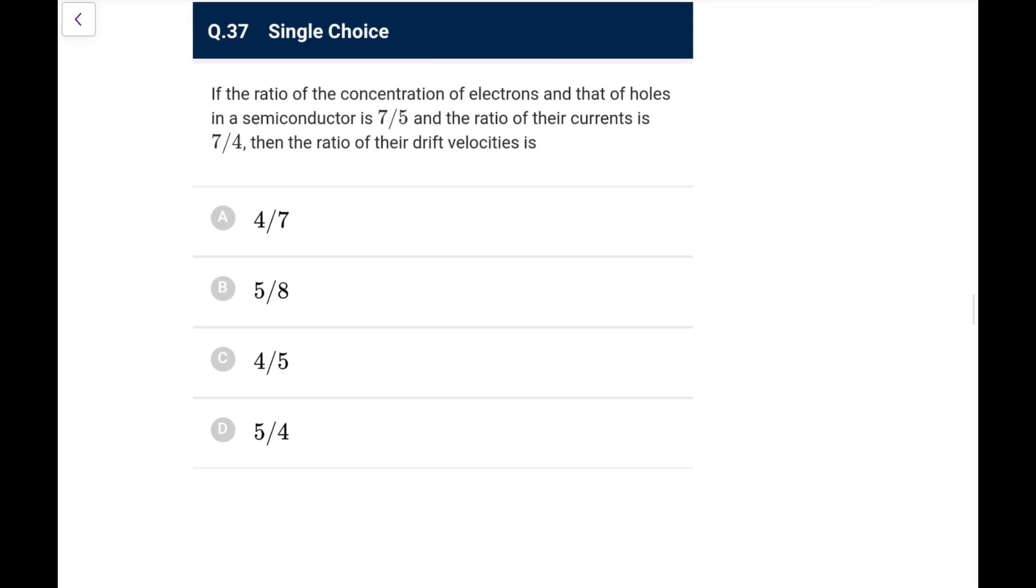Next one: if the ratio of the concentration of electrons and that of holes in a semiconductor is 7 is to 5, ratio of their current is 7 is to 4, ratio of their drift velocities. So you know the basic equation I is NEAVD. So ratio of concentration is given, charge is same, area will be same, drift velocity you have to take. So I_e upon I_h, I can write as N_e upon N_h into V_D of electron to V_D of holes.